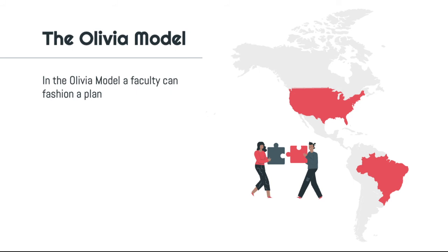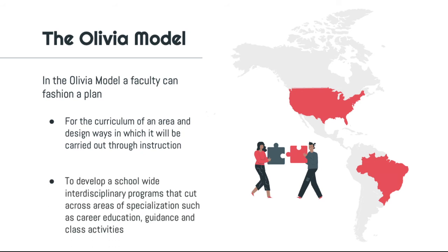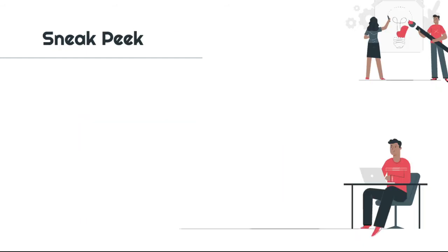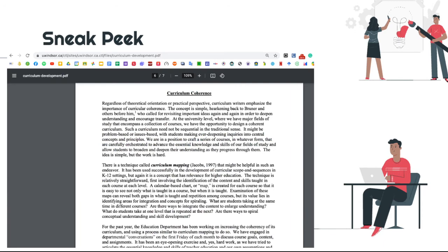The Olivia Model. Faculty can fashion a plan for the curriculum of an area and design ways in which it will be carried out through instruction, to develop school-wide interdisciplinary programs that cut across areas of specialization, such as career education, guidance, and class activities.